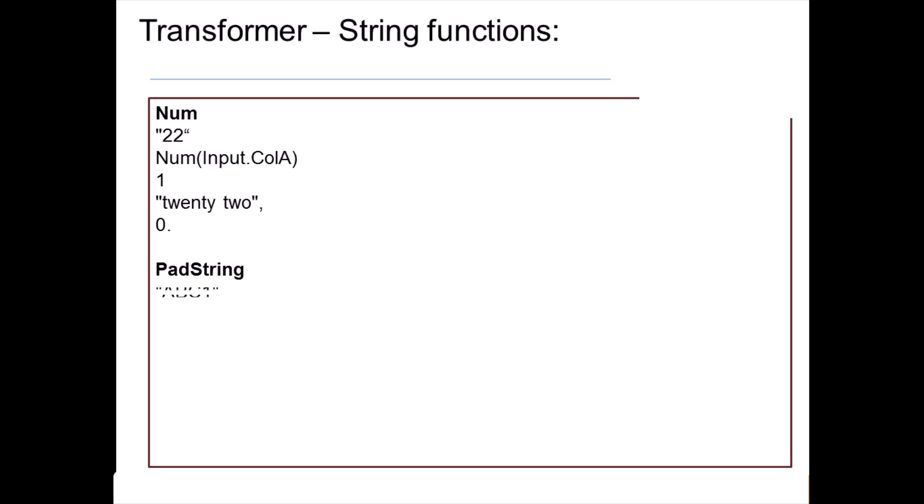Another string function is padstring. For input 'abc1', calling padstring(input_column_A, '0', 5) gives output 'abc100000' — it pads 5 zeros. When you have a fixed-length output column and don't want spaces or nulls, padstring fills the empty space with a specified character repeated a specified number of times. Any character can be defined — for example, you could pad spaces for character data types.